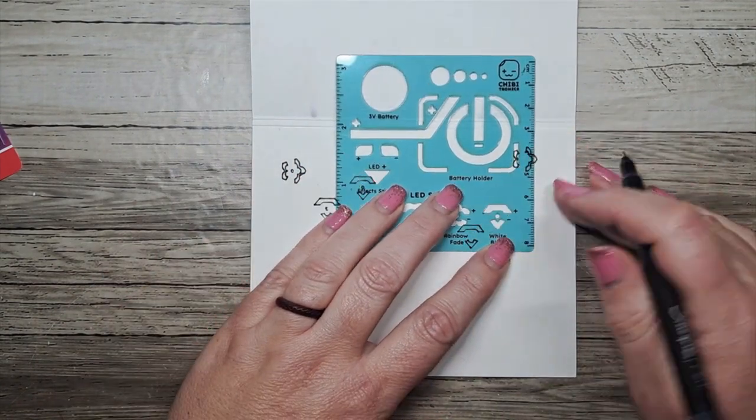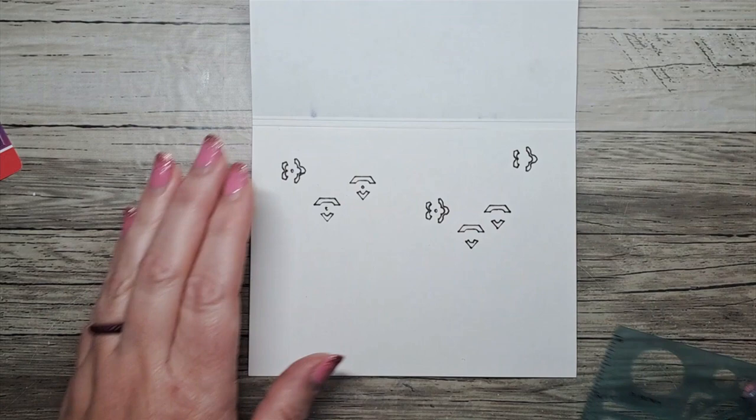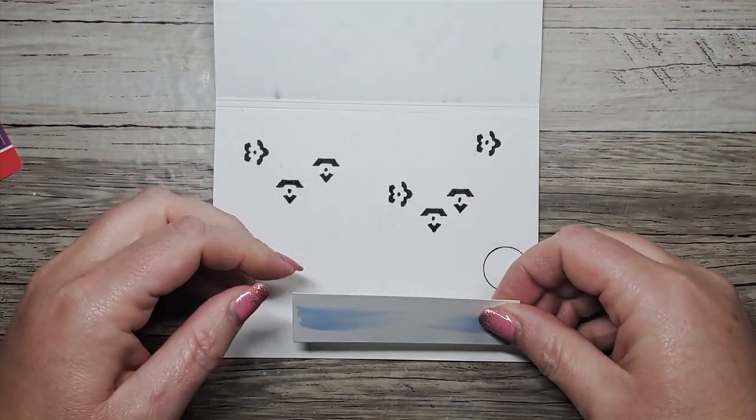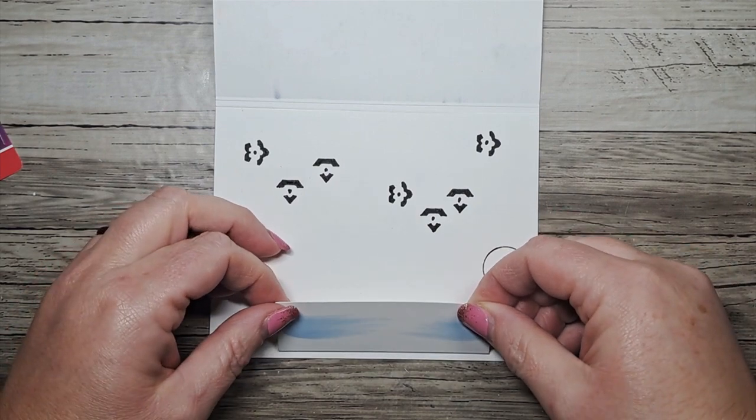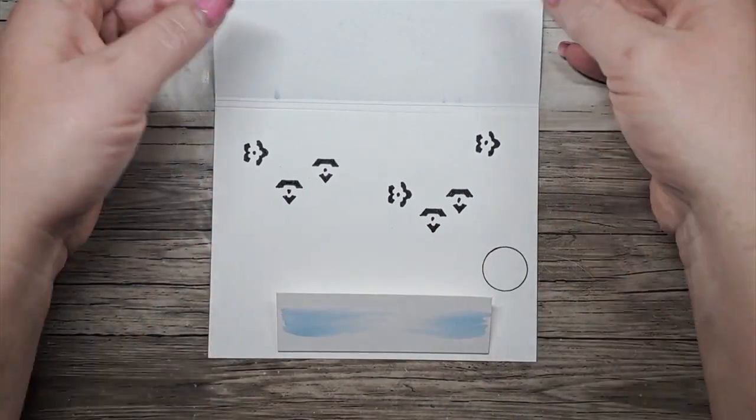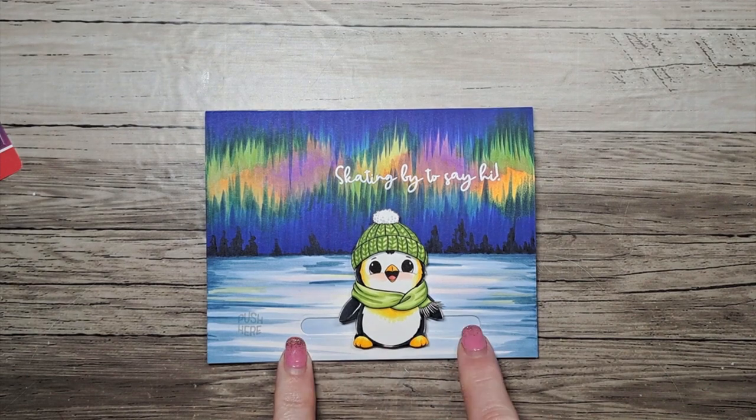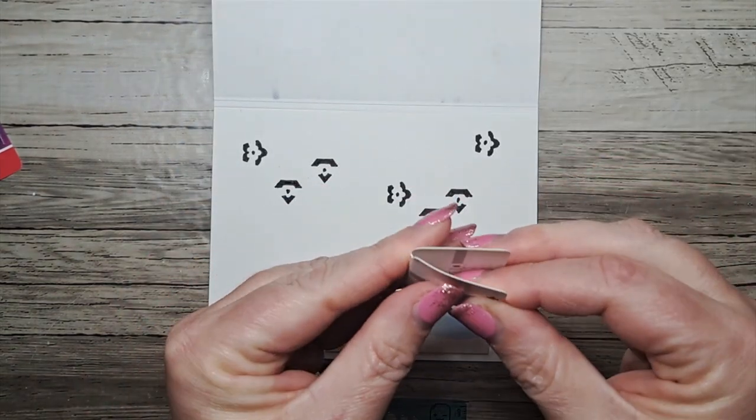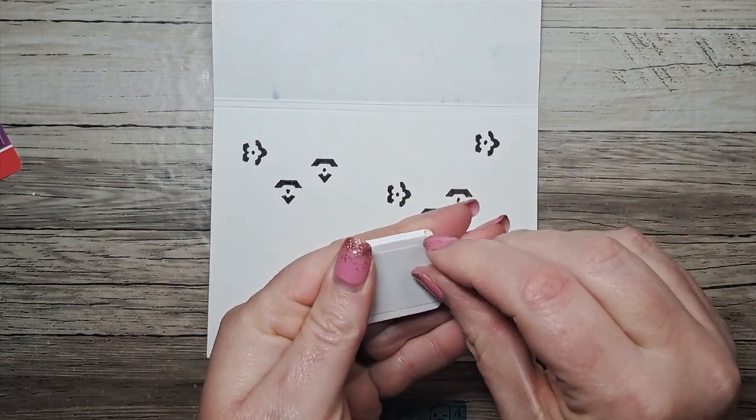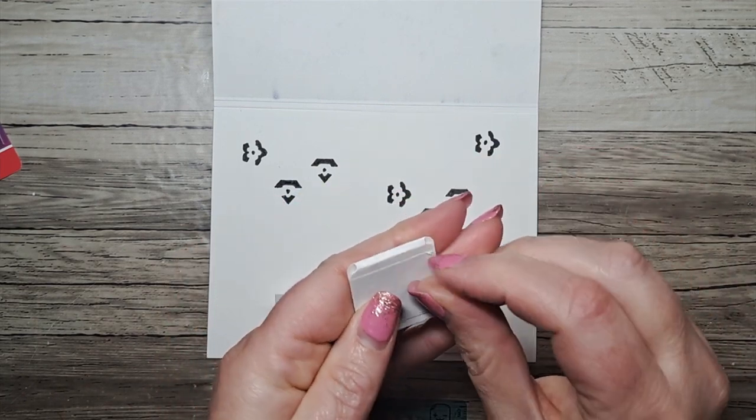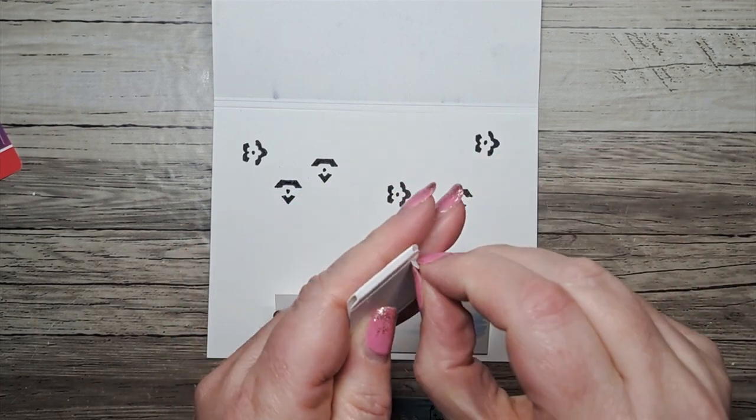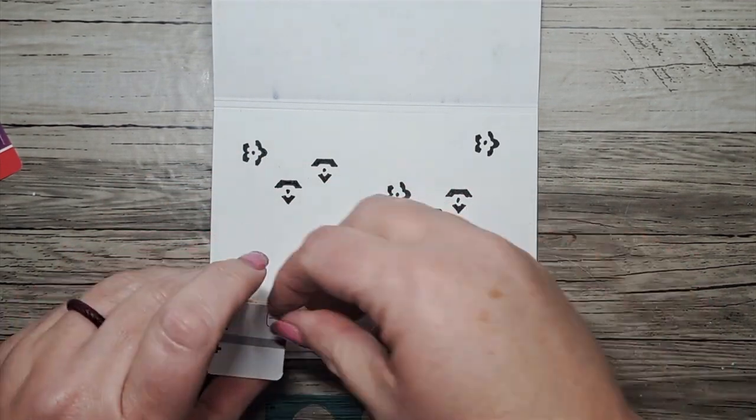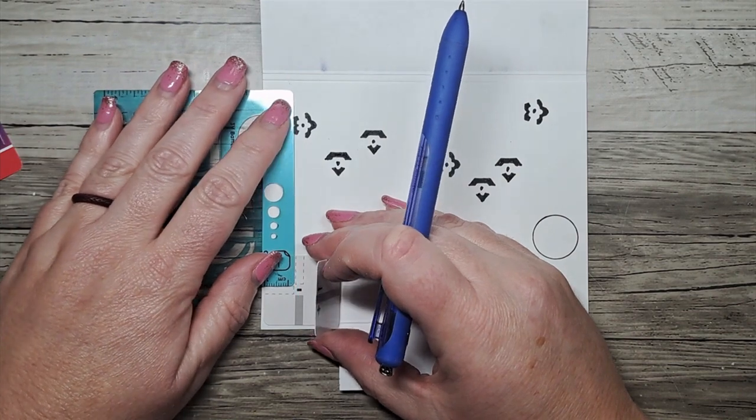We're just going to put four of them randomly spaced across and in between those rainbow fades. All right, we're going to use this as our switch and we're going to place it underneath where our little penguin sits, because when you press the little penguin's feet, it's going to turn on some lights. Let's add our battery holder. We're going to have two circuits, so we're going to actually have two batteries in this card.